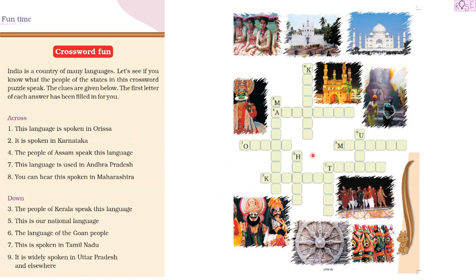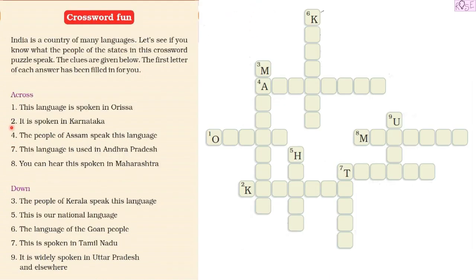The first clue is: this language is spoken in Orissa. So the answer is Odia. We write O, then D, then I, then Y, then A — so the language is Odia, which is spoken in Orissa.